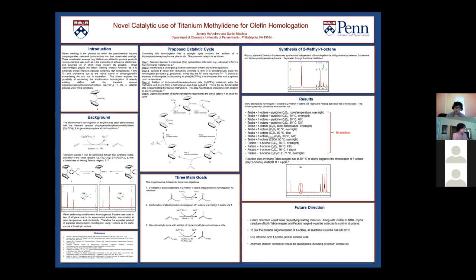Up to this point, steps 1, 2, and 3 are all recapitulations of the stoichiometric reaction. However, what would be new is step 4: the addition of the triphenylmethylene phosphorus ylide would oxidatively add the methylene unit to complex C to form a methylidene-Lewis base adduct D. This is the fundamental step in regenerating the titanium-methylene species, and has literature precedent with divalent zirconium and titanium complexes. Step 5 is ligand dissociation of tetraphenylphosphine to regenerate the active catalyst and close the cycle. For experimental trials, I used 1-octene instead of ethylene due to its experimental availability, non-volatility as a liquid at room temperature, and non-toxicity. Any trials of this reaction are expected to produce the homologated product 2-methyl-1-octene. The project has three main objectives: (1) synthesize the product standard 2-methyl-1-octene independently as a reference, (2) confirm stoichiometric homologation of 1-octene via species 1, and (3) attempt the actual catalytic cycle using the triphenylmethylene phosphorus ylide.